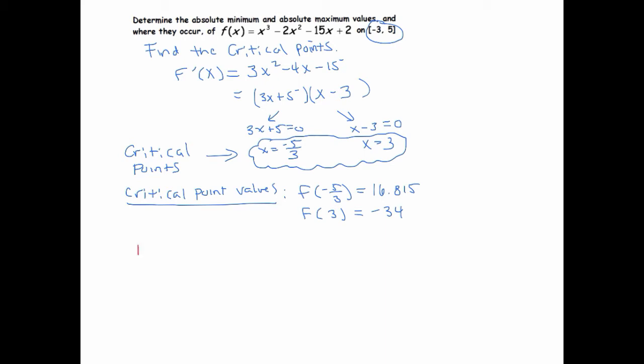So I'm going to check the endpoints. I'm just going to evaluate the function at negative 3 and at 5. At negative 3, I get out of 2. And at 5, I get out of 2.